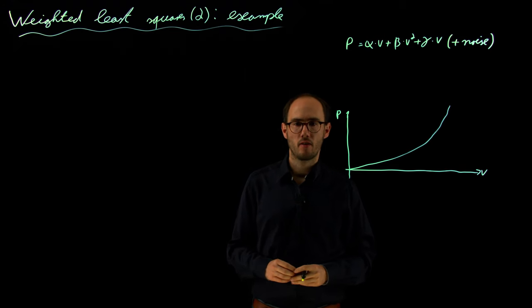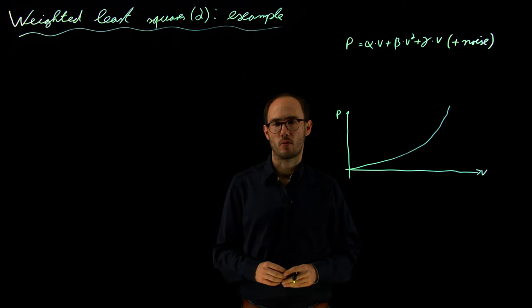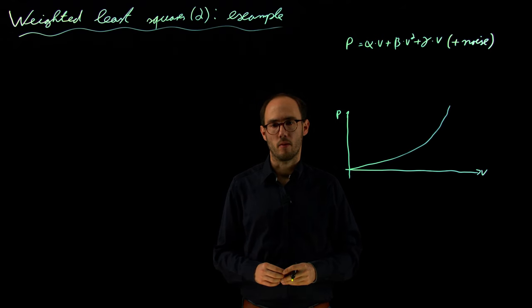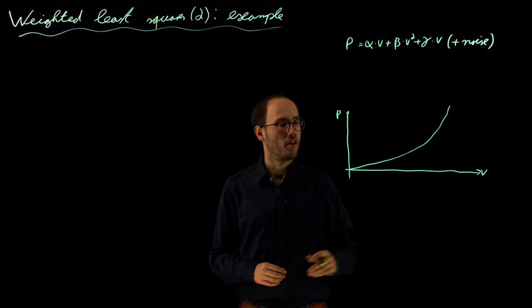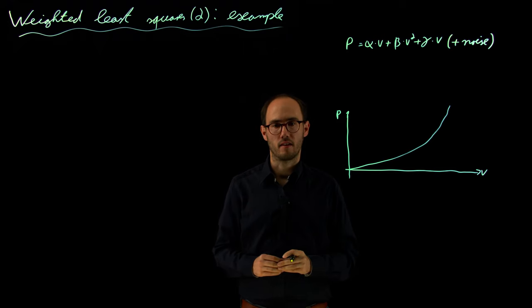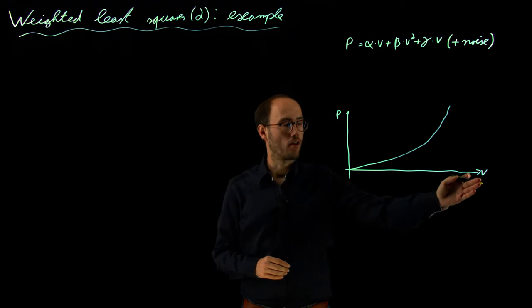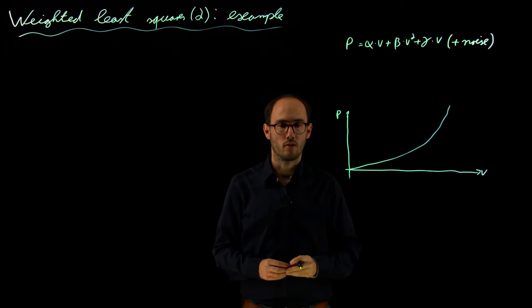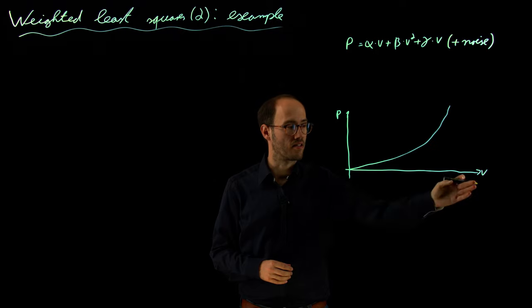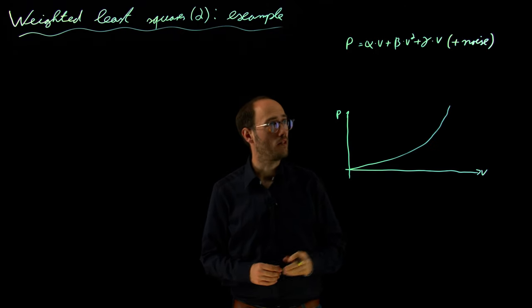Hello, in the previous video we have introduced the weighted least-square solution and in this video I would like to apply this to one of our previous examples where we wanted to identify the car model, basically the velocity of the car against the required mechanical energy to drive at a certain steady-state speed.